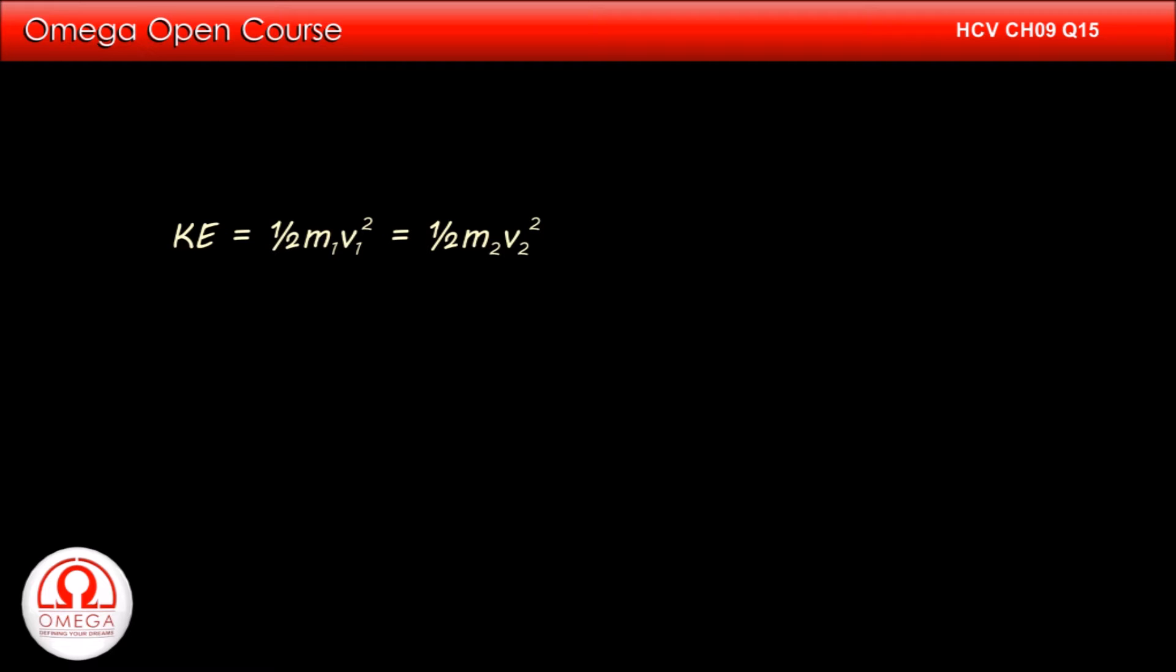Then the kinetic energy of both particles is given by half m1v1 square and half m2v2 square respectively. Since both these energies are equal, half m1v1 square by half m2v2 square must be equal to 1.